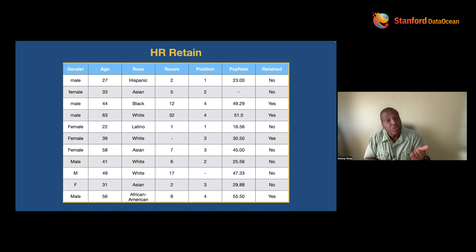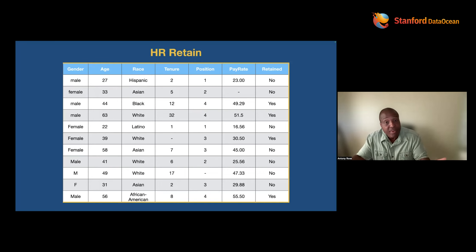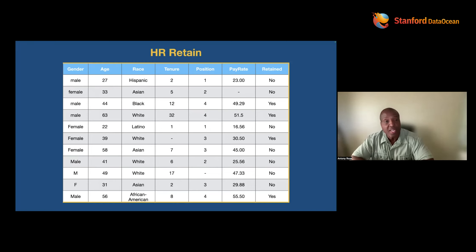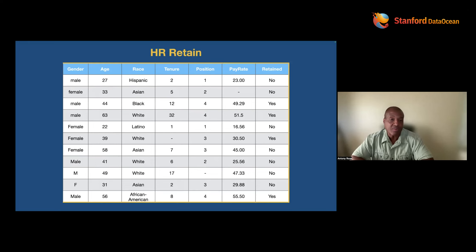Same thing with names. Names are arbitrarily given to people. The machine, if you give it a name, is going to work so hard to find a relationship between name and who's retained. The machine might find a spurious relationship — it might discover that if you have 'bell' in your name, you're going to be retained. We know that's not true. When you put the machine out in the world, that's why it doesn't perform well — you told it something that's not true in the real world.